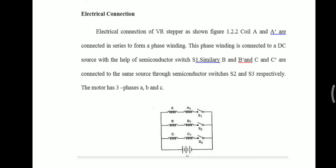When it comes to the electrical connection of the VR stepper motor, coils A and A' are connected in series to form a phase winding. This phase winding is connected to a DC source through a switch called S1. Similarly, B and B' and C and C' are connected in the same manner using switches S2 and S3 respectively. Totally the motor has three phases: A, B, and C.